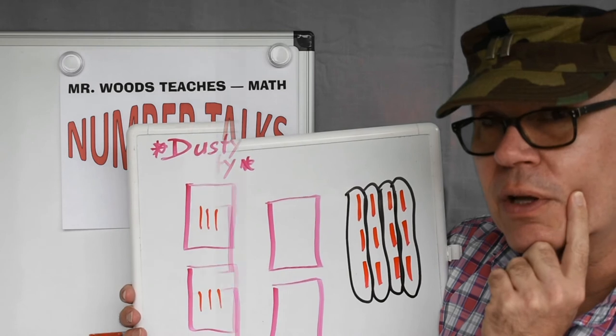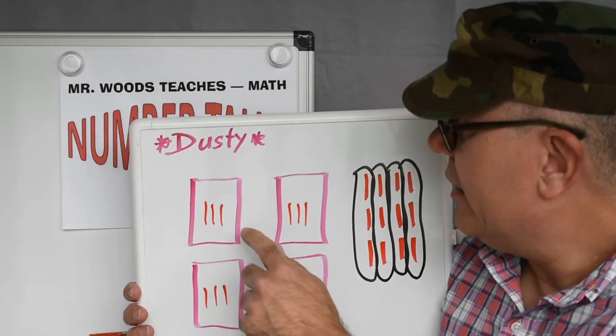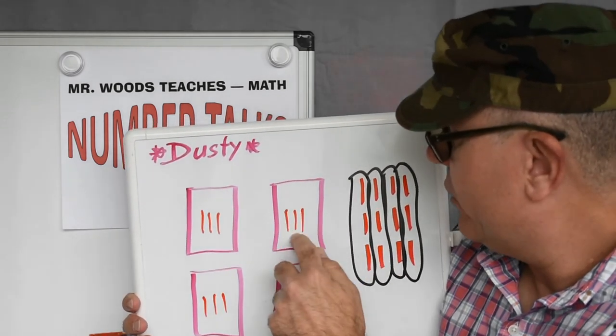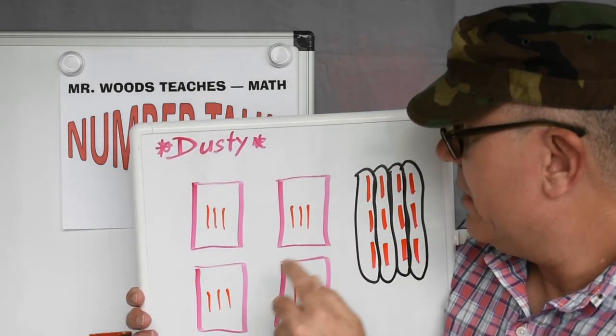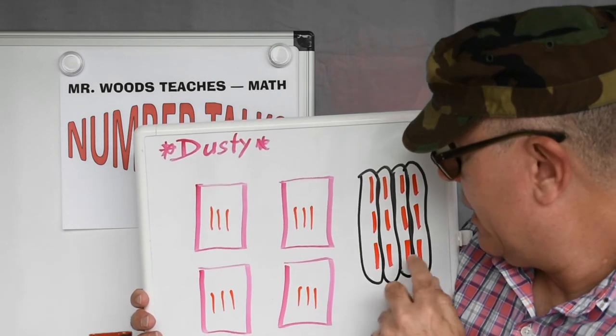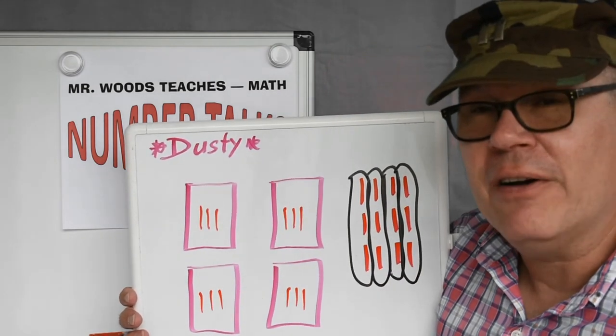Now, where should I put those? See where I put the groups of 3? So that group is this group, this group is that group, and so on and so forth. That's how I figured it out.